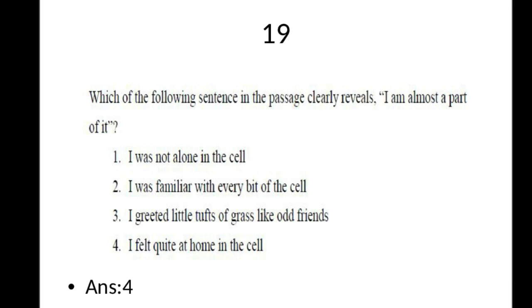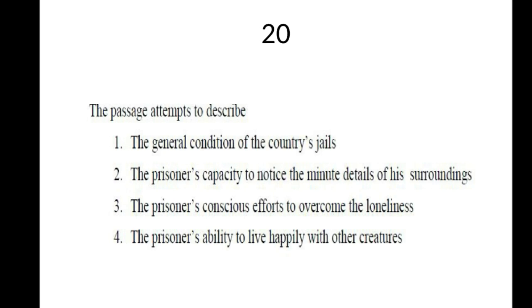Question 19: Which sentence does the passage clearly reveal? The fourth option — 'I felt quite at home in the cell' — is the correct answer. Question 20: The passage attempts to describe which of the following? Options: general condition of the country's jails, prisoners' capacity to notice minute details of surroundings, prisoners' conscious effort to overcome loneliness in prison, prisoners' ability to be happy with other creatures. The third option — prisoners' conscious effort to overcome loneliness — is the correct answer.